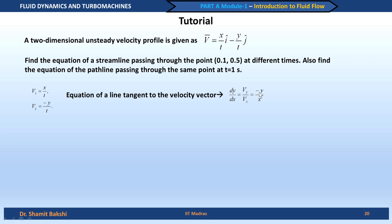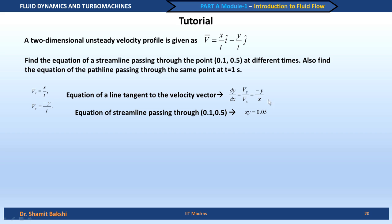We can now find the streamline equation passing through (0.1, 0.5). Rearranging dy/y + dx/x = 0 and integrating gives xy = constant. Plugging in x = 0.1 and y = 0.5 gives the constant as 0.05. So the streamline equation is xy = 0.05. The key point demonstrated here is that even though the flow is unsteady, the streamline does not change with time in this particular case.